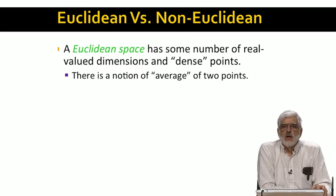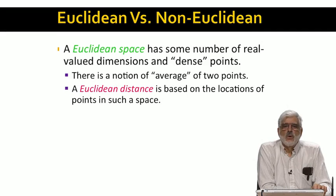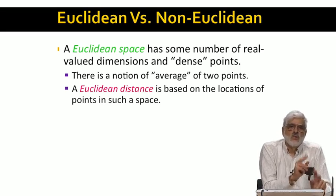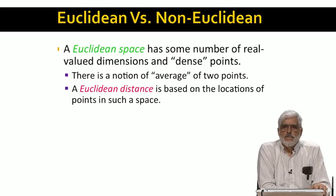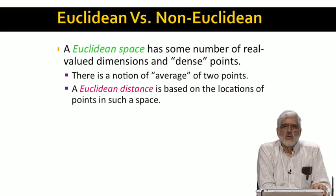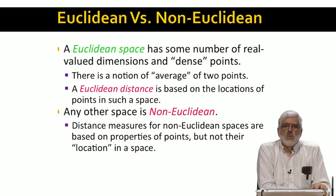For example, if you're trying to cluster points and you want to represent a cluster by a single typical point, it's nice to be able to take the average of the points in the cluster. But you can't always do that for non-Euclidean spaces. There are many notions of distance between points in a Euclidean space, and we shall often refer to any of these as a Euclidean distance. Non-Euclidean distance is based on something other than the location of points in a space.